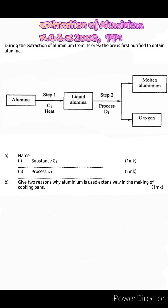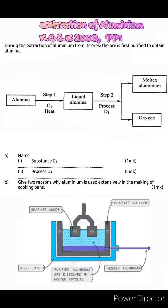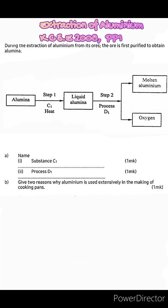Now the liquid alumina then undergoes process D1 leading to the formation of molten aluminum metal and oxygen gas. Now of course this process is electrolysis. So let's look at part A. Name substance C1. This is sodium cryolite. Name process D1. And this of course is electrolysis.